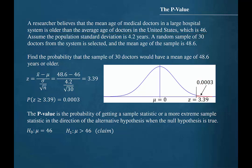Let's state the hypotheses for this situation. The null hypothesis would be that the population mean is equal to 46. The alternative hypothesis would be that the population mean is greater than 46. The claim would be in the alternative hypothesis in this case.